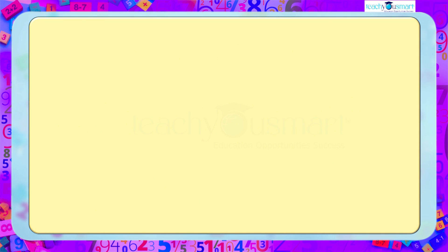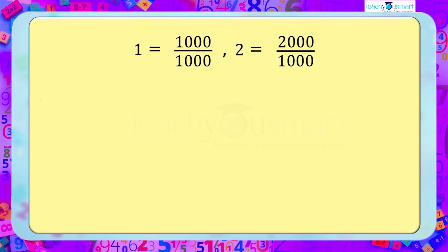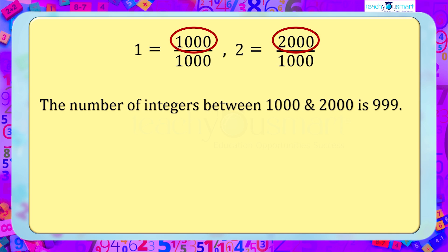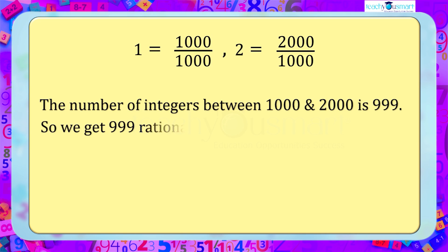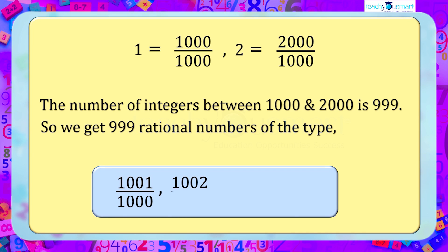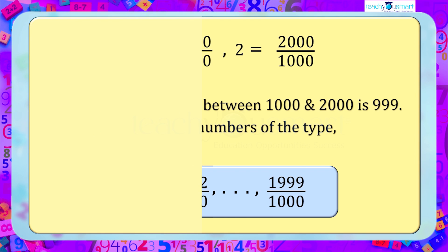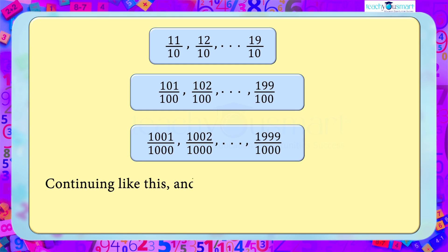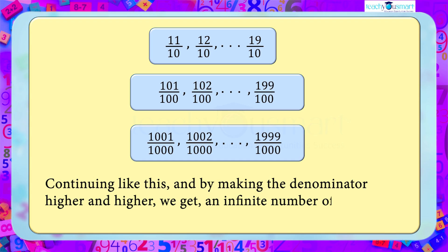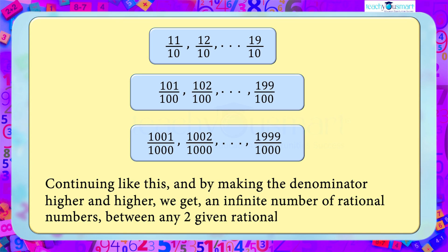Similarly, when we write 1 as 1000 by 1000 and 2 as 2000 by 1000, the number of integers between 1000 and 2000 is 999, so we get 999 rational numbers of the type 1001 by 1000, 1002 by 1000, etc., up to 1999 by 1000. Continuing like this, by making the denominator higher and higher, we get an infinite number of rational numbers between any two given rational numbers.